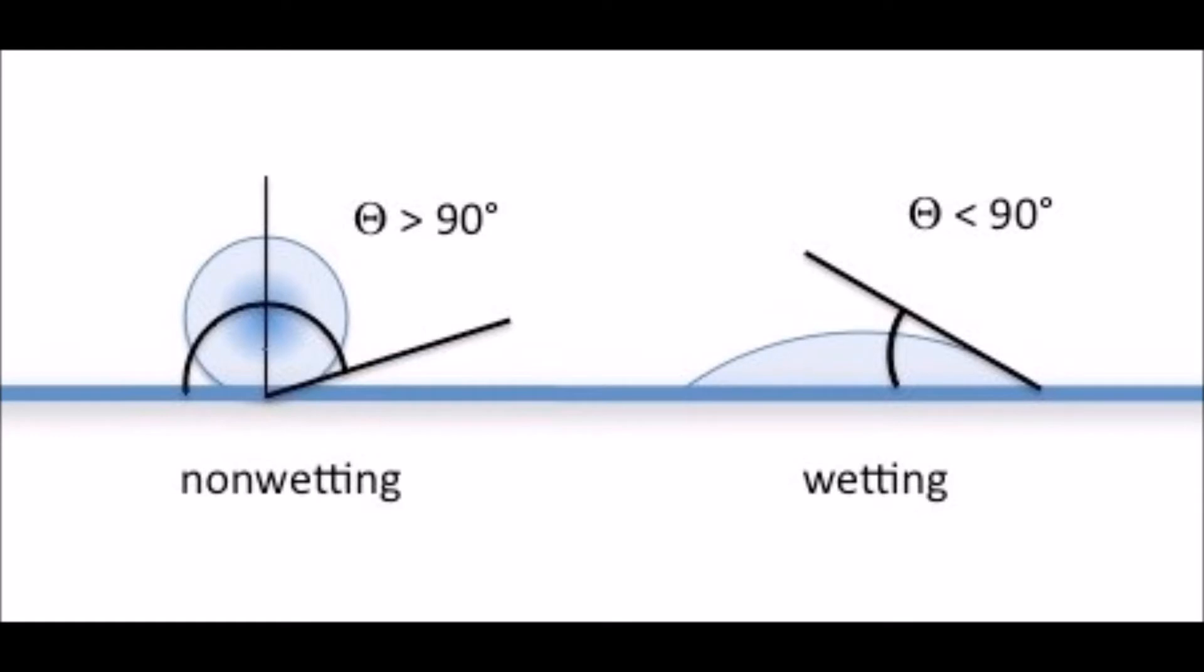Wettability is the tendency of a fluid to spread over a solid surface in the presence of other surrounding immiscible liquids and measured by the contact angle between the given fluid and the surface. The smaller the contact angle, the greater the wettability.